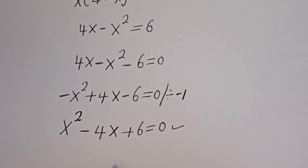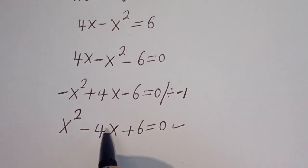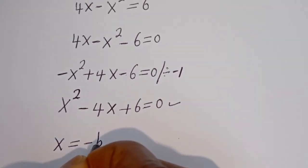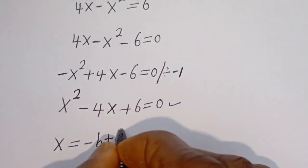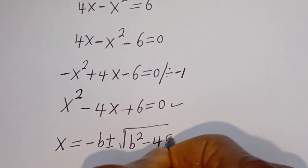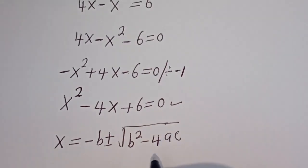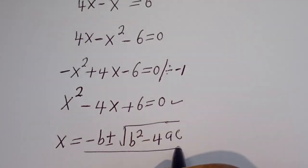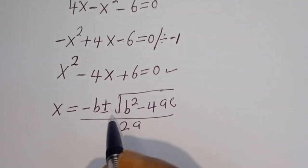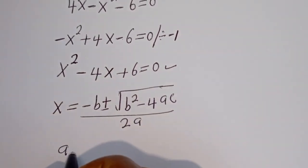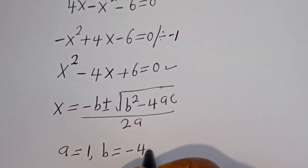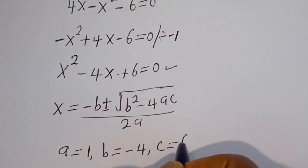This is a quadratic equation. Let's solve this using the quadratic general formula: x is equal to minus b plus or minus square root of b squared minus 4ac, over 2a. From this equation, a is equal to 1, b is equal to minus 4, and c is equal to 6.